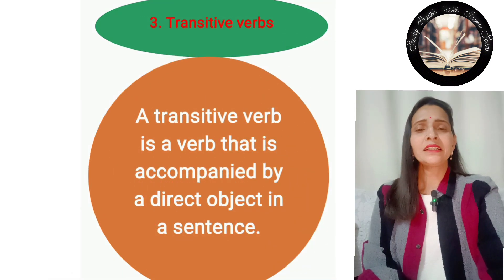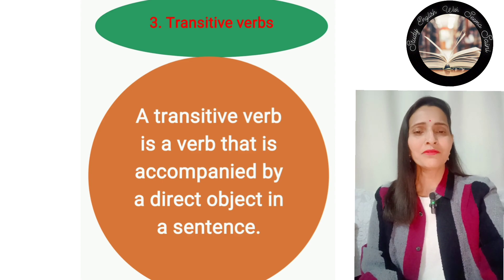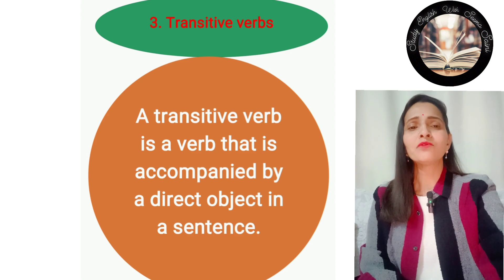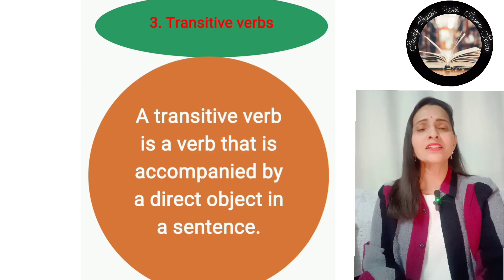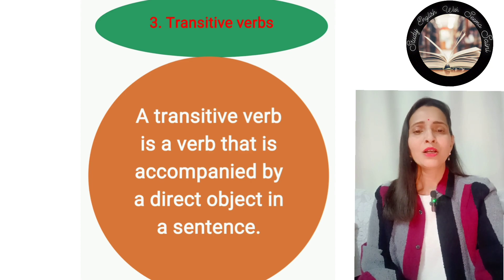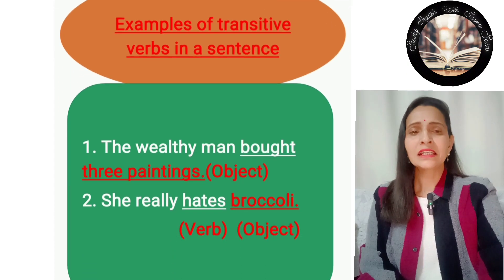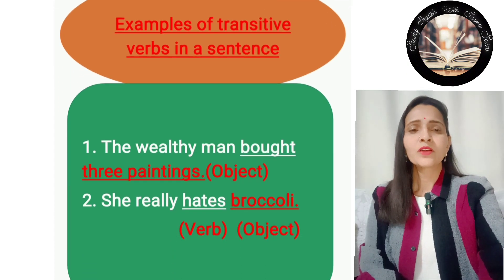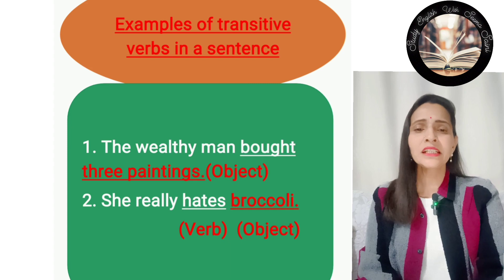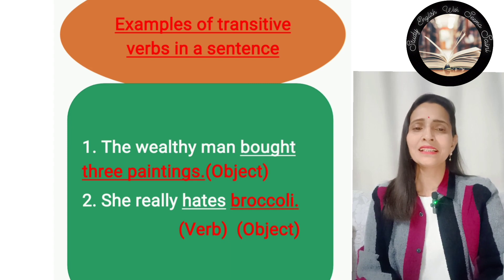Number three: transitive verb. A transitive verb is a verb that is accompanied by a direct object in a sentence. For example: 'The wealthy man bought three paintings.' Here, 'three paintings' is the object, and 'bought' is the verb.